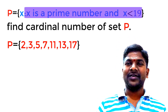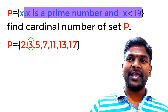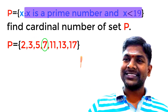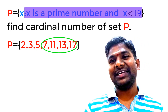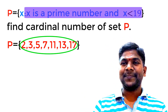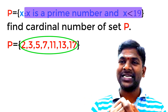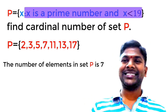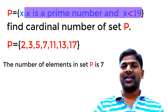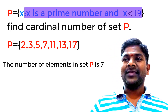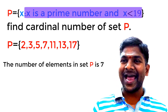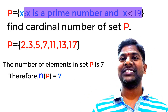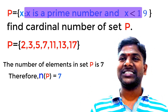Now try to count: 2, 3, 5, 7, 11, 13, 17 — how many elements are in set P? Exactly 7. So the cardinal number of set P is 7. The cardinal number of set P is denoted by N of P, so we write N of P is equal to 7. This is about the cardinal number.